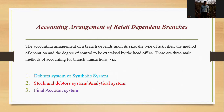Now we discuss the accounting arrangement of retail dependent branches. The accounting arrangement of a branch depends upon its size, type of activities, method of operation, and the degree of control exercised by the head office. There are three main methods of accounting for branch transactions: the debtor system or synthetic system; the stock and debtor system, also known as the analytical system; and the final account system. Today we will discuss the debtor system or synthetic system.